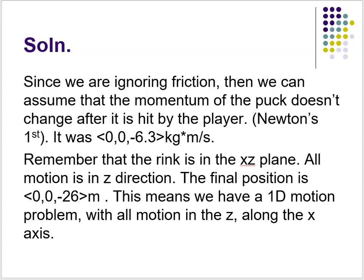The momentum at the final position is going to be the same as the momentum at the hit. Remember that the rink is in the XZ plane, so all the motion is in the Z direction. If the final position is at (0, 0, −26), the puck stays on the ice, meaning the XZ plane is the horizontal plane and Y is up-down. So the motion is essentially one-dimensional — the momentum is in the Z direction, the velocity is in the Z direction, and the final position has Z = −26 with X = 0 and Y = 0.